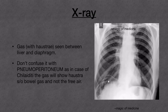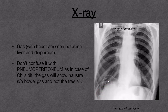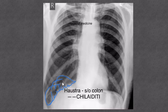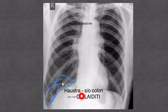Coming to the X-ray: most of the time Chilaiditi is an incidental finding noted on routine X-ray examinations. It will be seen as gas with haustrations between the liver and diaphragm. Here, this is the liver, this is the diaphragm, and here is the gas with haustrations — so it is Chilaiditi. Do not confuse it with pneumoperitoneum, because in Chilaiditi the gas will show haustrations suggestive of bowel gas and not free air, while in pneumoperitoneum there will be no haustrations and it will be clear gas under the diaphragm. The haustrations of the colon are suggestive of colonic gas and hence Chilaiditi, which also rules out the possibility of pneumoperitoneum. You can now confidently diagnose Chilaiditi from this.